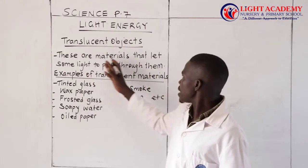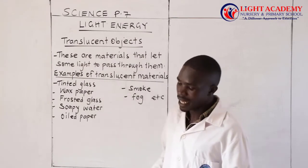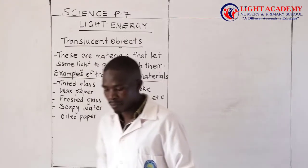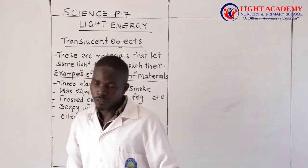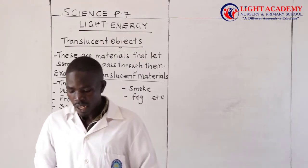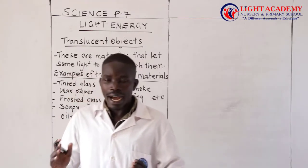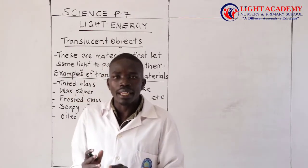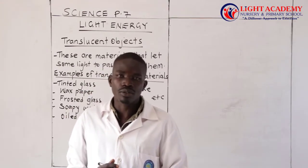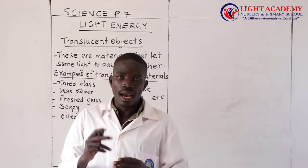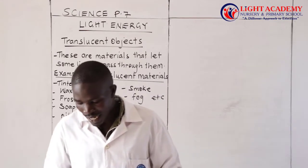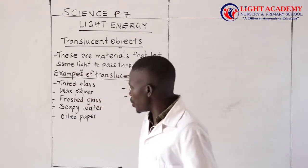These are materials that allow some light to pass through them. We should know what happens to light when light rays fall on translucent materials. What happens is that light is scattered.